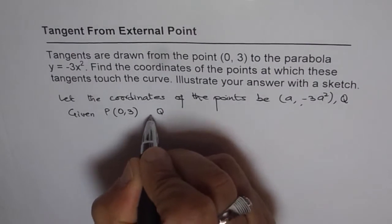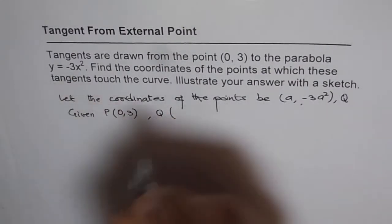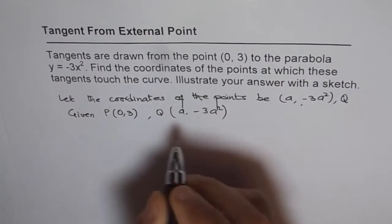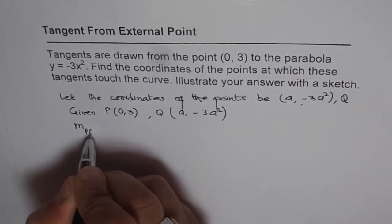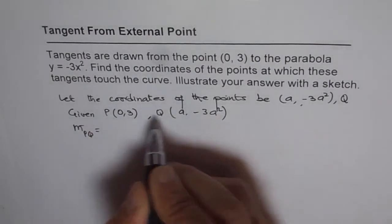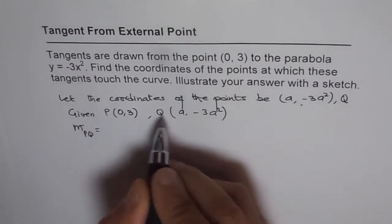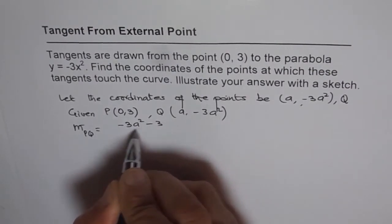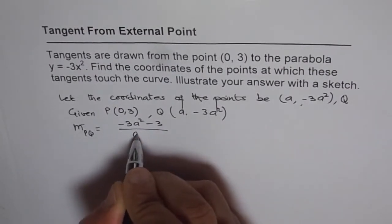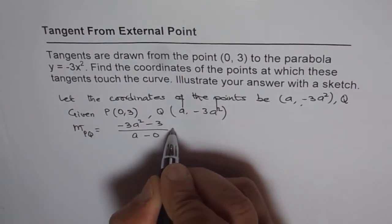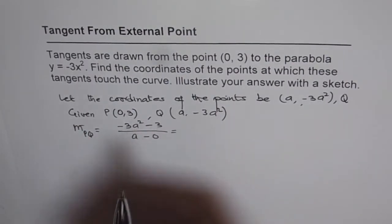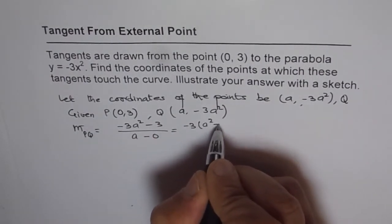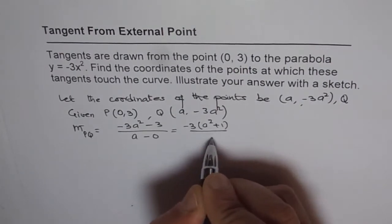We have the point Q on the curve which is (a, minus 3a squared). The slope of PQ is y2 minus y1 divided by x2 minus x1, that is minus 3a squared minus 3, divided by a minus 0. So that becomes the slope, which we can write by taking minus 3 common as minus 3 times (a squared plus 1) divided by a.